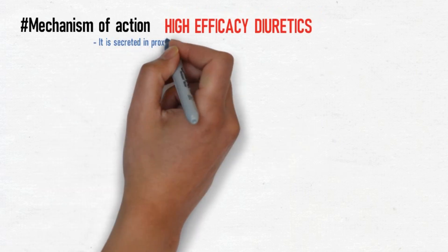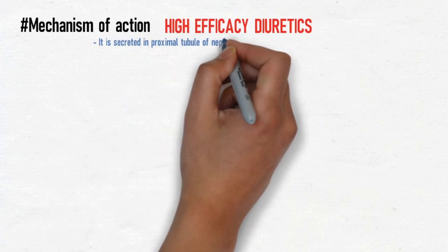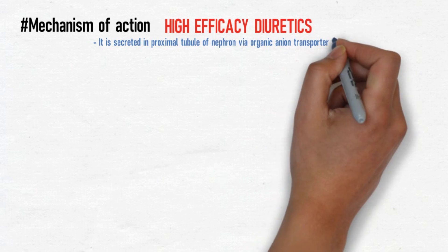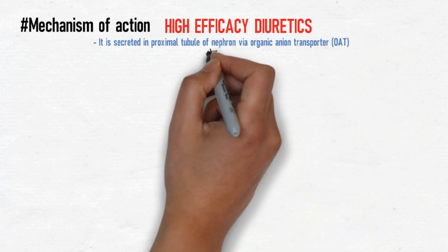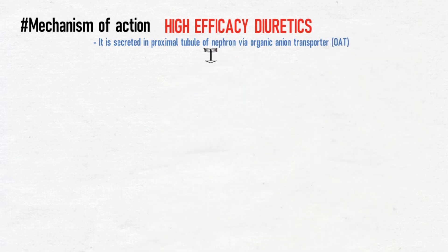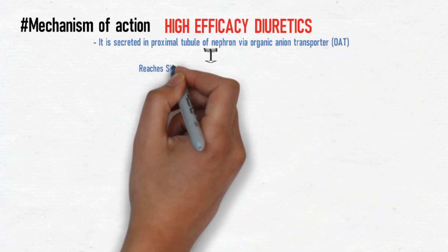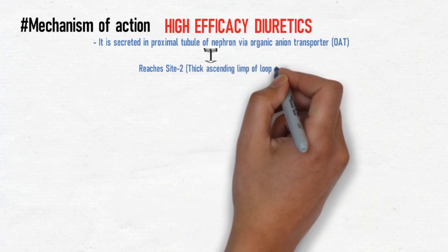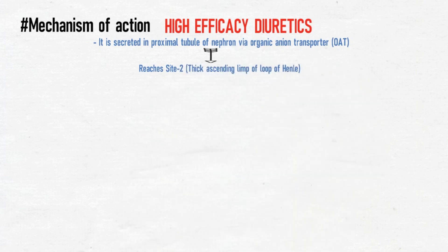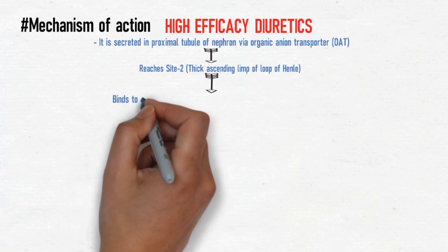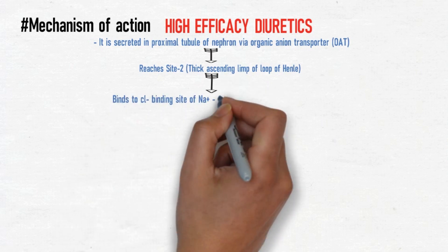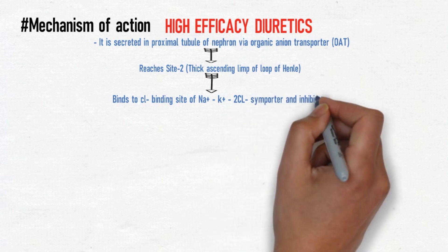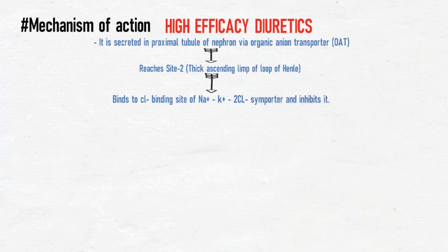Regarding the mechanism of action of high efficacy diuretics: after intake, the drug is secreted in the proximal tubule of the nephron via the organic anion transporter (OAT). It then reaches its site of action — the thick ascending loop of Henle — where it binds to the chloride binding site of the sodium-potassium-chloride symporter and inhibits it.